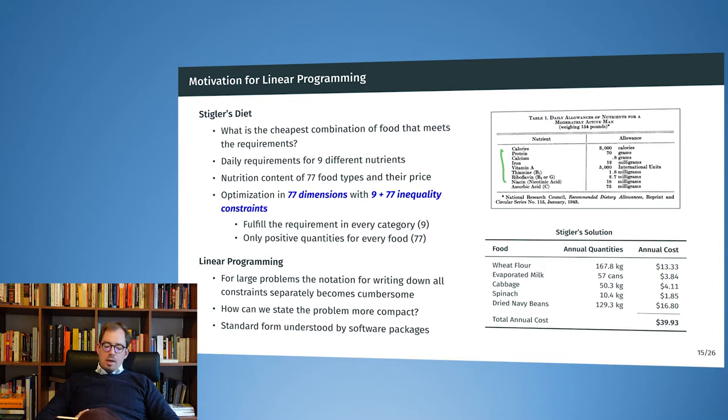Now we have the daily requirements for the nine different nutrients that are considered. We have the nutrient content of the 77 food types, and we know the price of the food. This gives us in total 9 plus 77 inequality constraints. Each of these daily requirements of the nine nutrients can be written as an inequality constraint, that the nutrient level of the food in combination has to be larger than the minimum requirement. And for the 77 food types, we can add the constraint that only positive quantities of this food can be consumed.